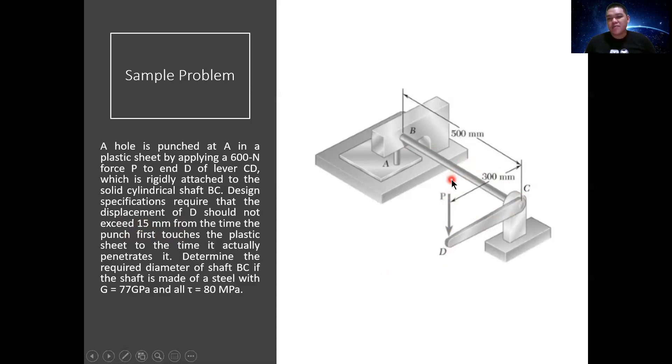There will be a relative angle created out of the turning of the shaft BC. And as it rotates or twists through its longitudinal axis, it will penetrate at point A. The displacement should not exceed 15 mm. So basically if 15 mm is the allowable deflection at D, 15 mm is also the rotation of BC, and 15 mm is also the penetration at point A. That's the mechanism of the figure.